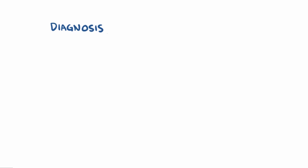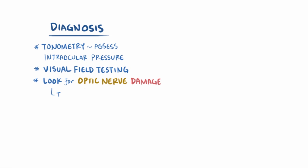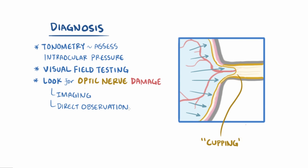For diagnosis of glaucoma, tonometry can be used to assess for increased intraocular pressure. Visual field testing can also be done, as well as looking for optic nerve damage, either through imaging or by direct observation. In particular, that pressure on the optic nerve results in a thinning of the outer rim of the nerve, which starts to give it a cup shape — this is called cupping, and it's often seen in individuals with glaucoma.